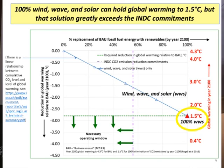Looking at that 100 percent wind, wave, and solar solution again: I've commented on the cost. To get global warming down to 1.5°C with 100 percent wind, wave, and solar, you need to be well beyond the CO2 reduction commitments that the world made in December 2015. So that's a problem.